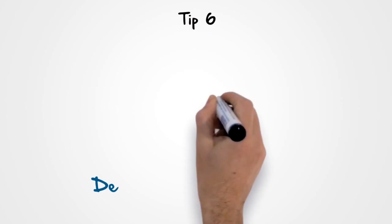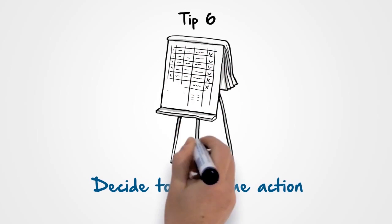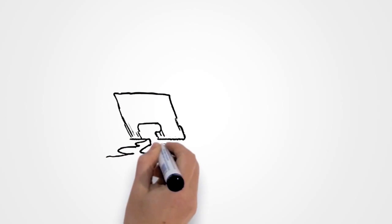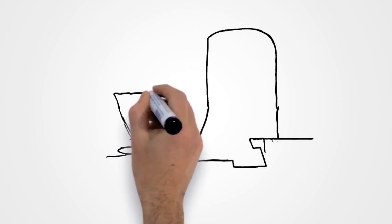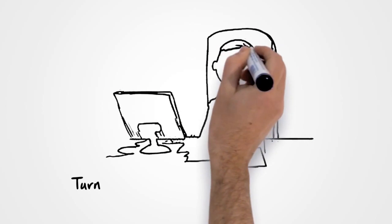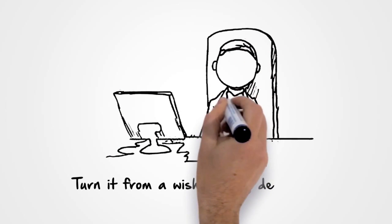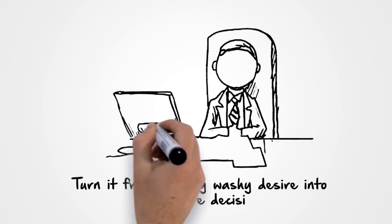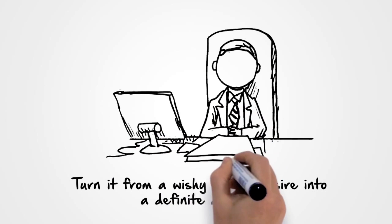Tip 6. Decide to take the action. This step may sound obvious but it's often missing. Turn it from a wishy-washy desire into a definite decision and cut off any option in your mind to not follow through.